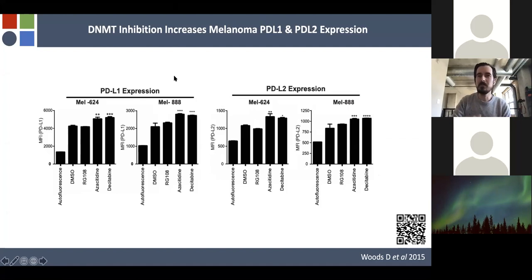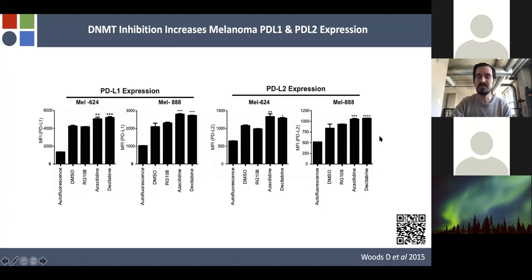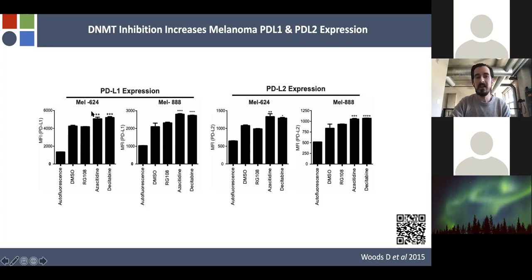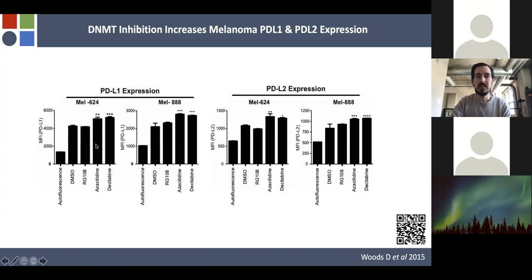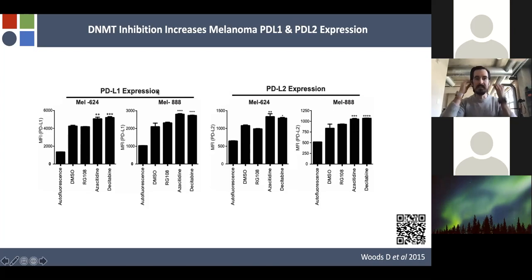Reviewers asked about other epigenetic modifying agents, particularly DNA methyltransferase inhibitors. In the supplemental of that publication, we took three DNMT inhibitors and found that azacytidine and decitabine do upregulate PD-L1 and PD-L2 expression in these cell lines. It's probably an epigenetic silencing mechanism — either through histone acetylation or DNA methyltransferase activity — which isn't surprising because DNMTs recruit HDACs and work in concert to silence genes.